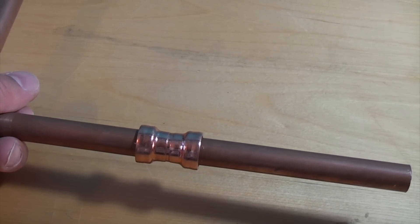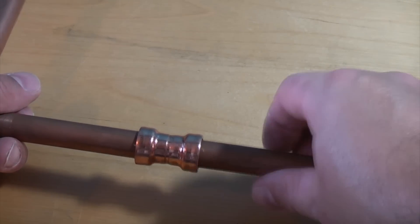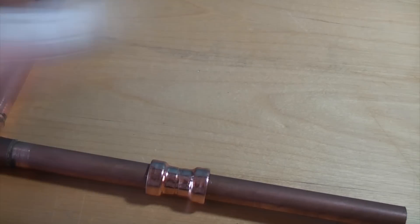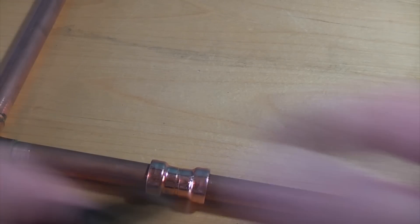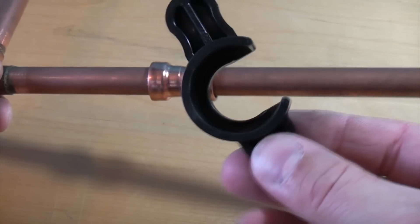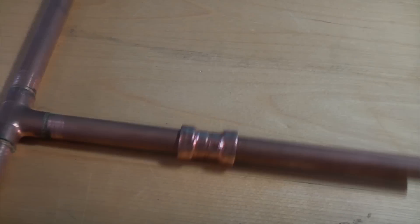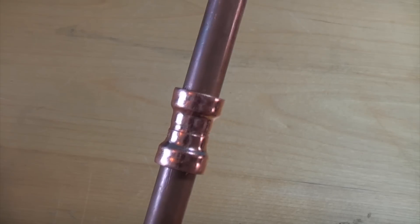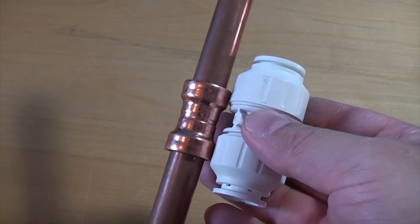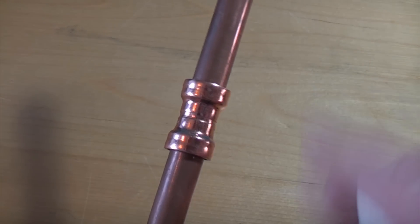They do look quite a lot better than a plastic push fit fitting if they're going to be on display. You can also undo these kinds of fittings, but you actually need a tool which looks like that to undo them. So if you want to use a push fit joint and your joint's going to be on display, the copper push fit ones are a nice alternative to the plastic ones.